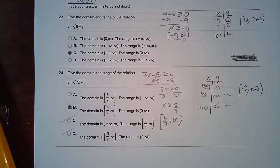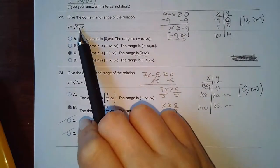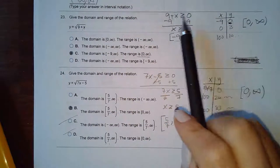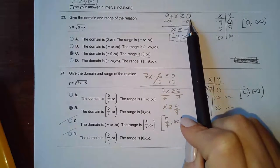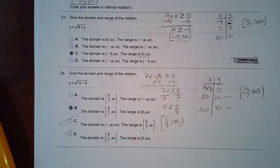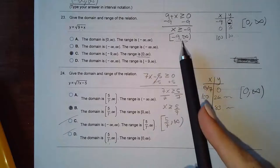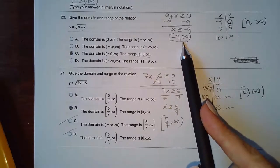For number 23, we had to give the domain and range of the relation, and it wants you to show the work algebraically. You take what's inside the radical and say it has to be greater than or equal to zero, then solve for x. In this case I subtracted nine from both sides and got that x has to be greater than or equal to negative nine.